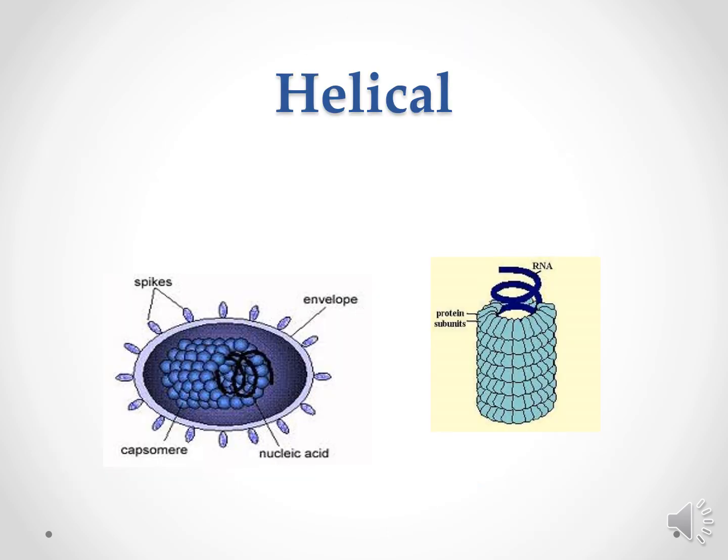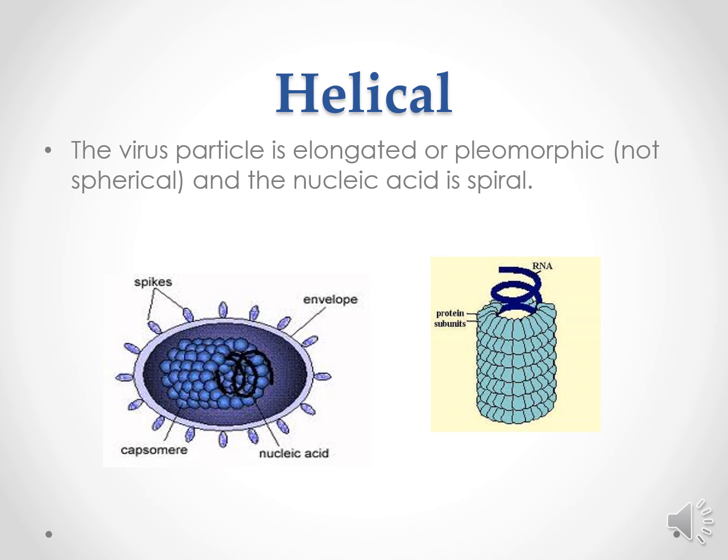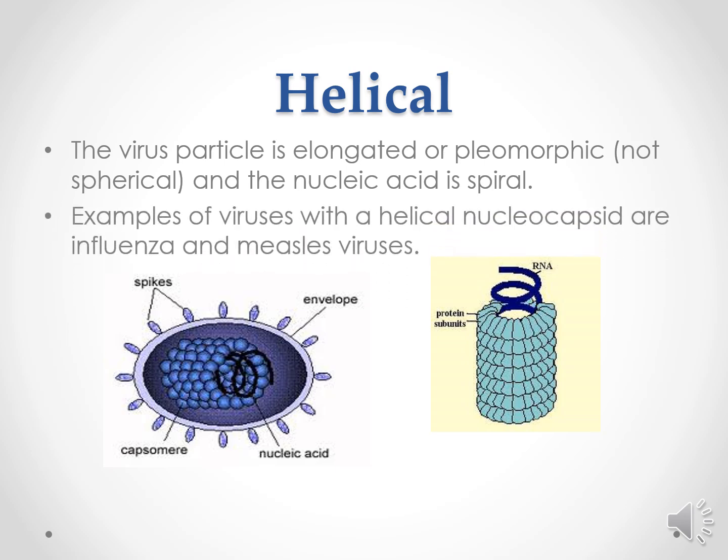In helical viruses, the particle is elongated or pleomorphic, not spherical. The nucleic acid is helical. Examples of helical type viruses are influenza and rabies virus.